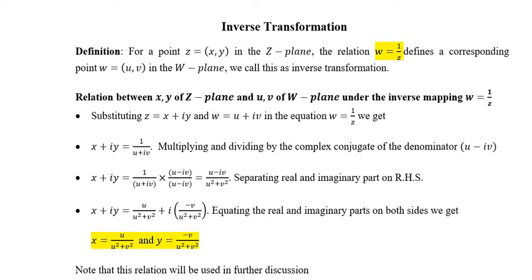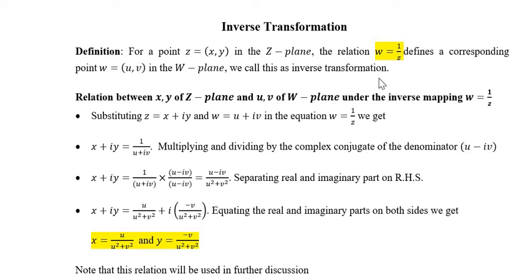Hello friends, I am Dr. Poonam Bora. Let us learn inverse transformation. The definition is: for a point z equal to xy in the z plane, the relation w equal to 1 upon z defines a corresponding point w equal to uv in the w plane. We call this the inverse transformation.